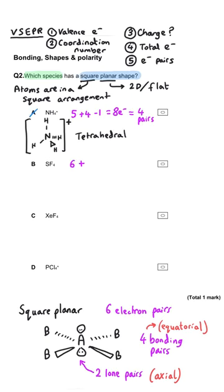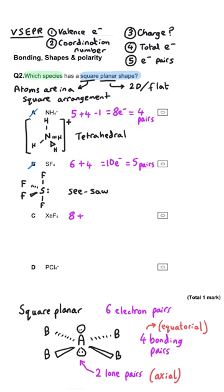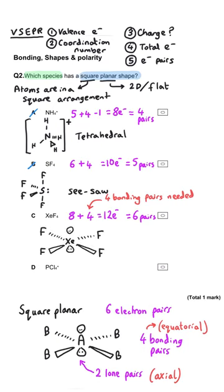Sulfur is in group six, giving six valence electrons. Add four from the four fluorines to get ten, divide by two gives five electron pairs — not square planar. Xenon tetrafluoride in C: xenon is in group eight so it has eight valence electrons, add four from the fluorines to get twelve, divide by two gives six electron pairs. We've only got four bonding pairs between xenon and fluorine, so this will be our square planar shape and is the correct answer.